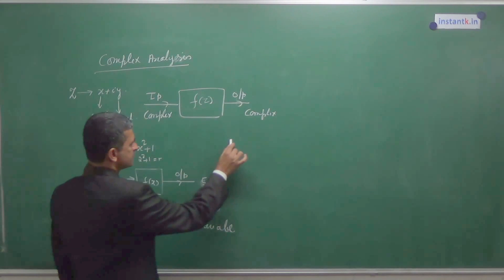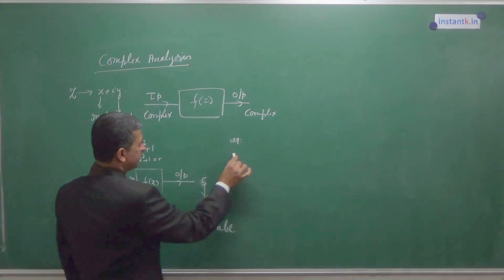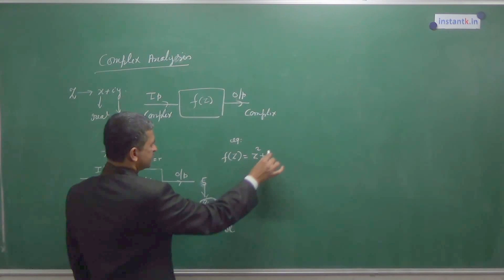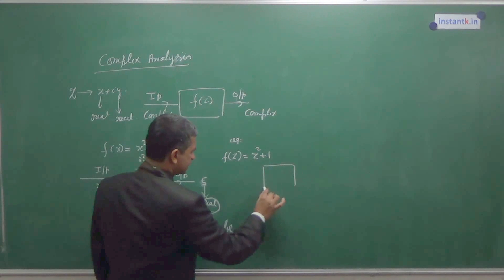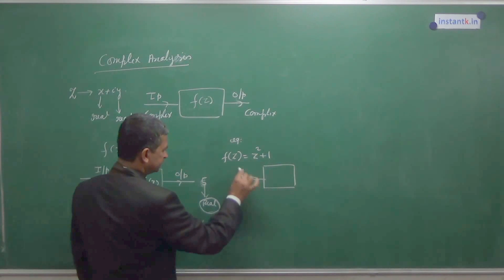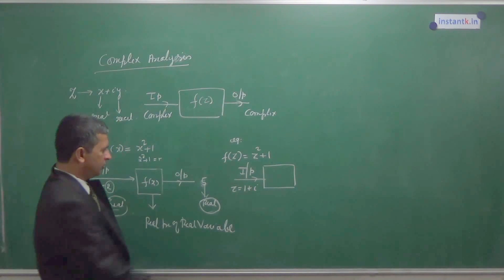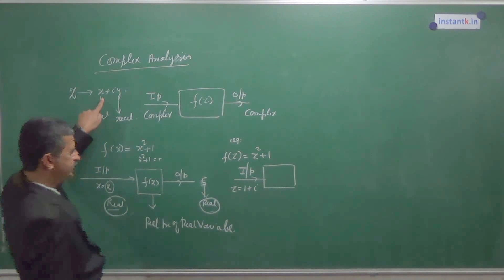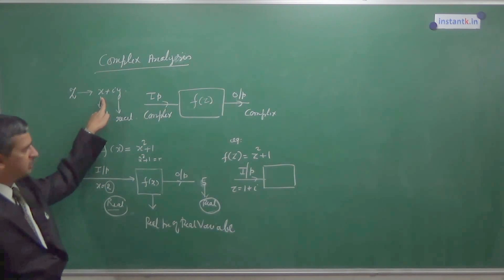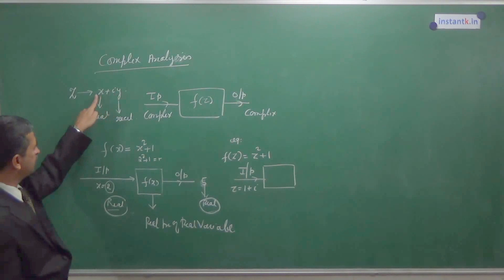For example, we take F of Z equal to Z square plus 1. I take now for this, I give the input Z equal to 1 plus i. What is 1? 1 is a real number. 1 plus 1i. That means Z in this Z, X is 1, Y is 1. So Z is 1 plus 1i.